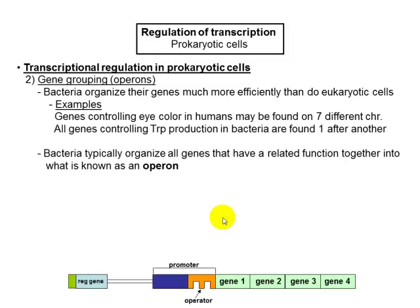Regarding transcription regulation in the prokaryotic cell: genes are grouped in a neat, organized way called operons. When genes come out in tandem sequence — stuck to each other — those are called operons. An operon is a structure in the DNA of the prokaryote, inside the bacterial DNA. Before the operon, there are regulatory genes.